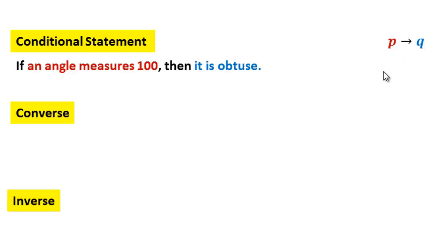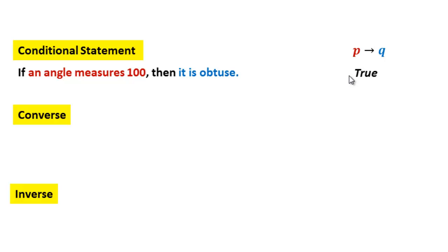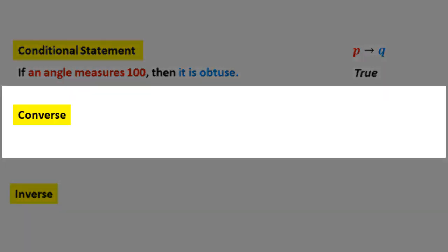Let's look at the truth value. Can you think of a single instance where an angle measures 100° but is not obtuse? I cannot, because that fits right into the definition of an obtuse angle. So this conditional statement is true.